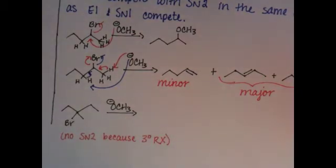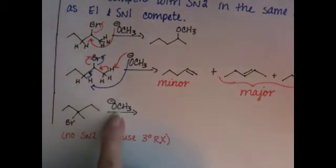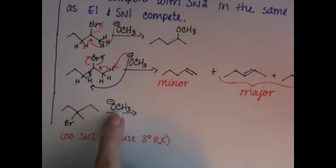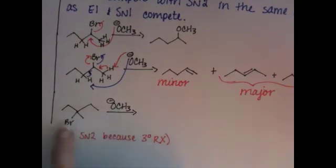And again, we're not going to be doing SN1 because we have a strong nucleophile. This strong nucleophile is only going to react by SN2, but there's going to be no SN2 reaction with a tertiary alkyl halide. So there's just no SN at all. There's no nucleophilic substitution. All we can do is elimination.